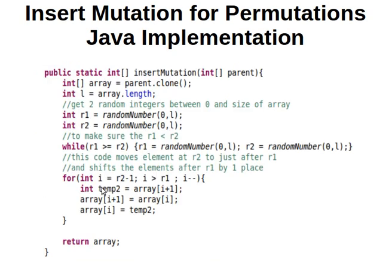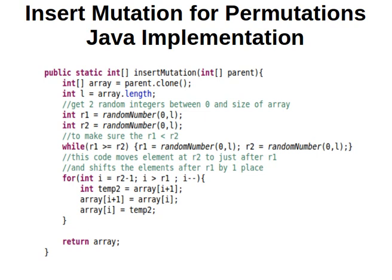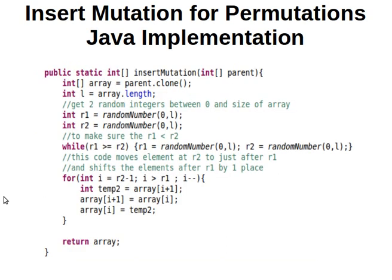What this code does is: we get the element at i plus one in a temporary variable and then we just swap it with the element before it. Remember, i starts at r2 minus one, which means i plus one is the element at r2. So we swap the element at r2 with the element at r2 minus one, then in the next iteration we swap r2 minus one with r2 minus two, and so on — shifting this element one by one until we stop at r1.